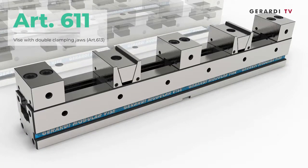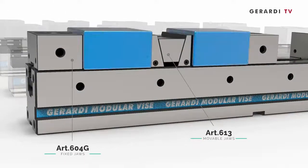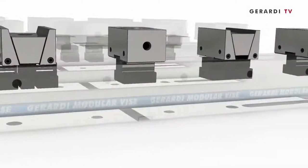Article 611 with double clamping jaws to clamp simultaneously multiple workpieces on vise base or raised up with barrels.